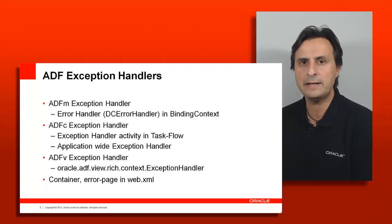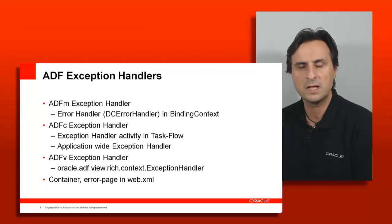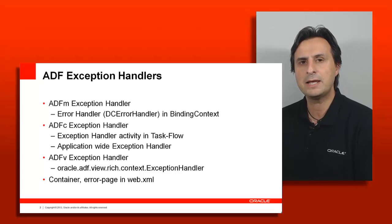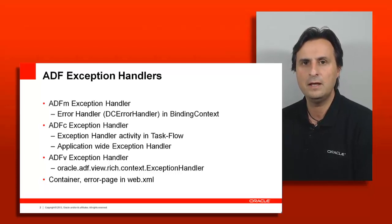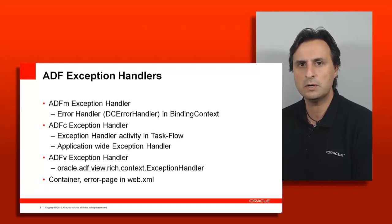On the binding layer there is a central point — covered in a separate recording — where you can create a custom error handler to dispatch all exceptions that happen in the binding layer and in the business service when accessed through the binding layer. For task flows we have two options: extending the overall framework exception handler and defining error handling activities in your bounded task flow. In ADF faces there's the option to use try-catch blocks in the managed bean, and the last resort is a setting in the web.xml file to avoid stack traces being displayed in the browser.